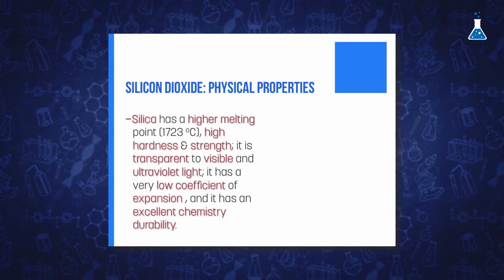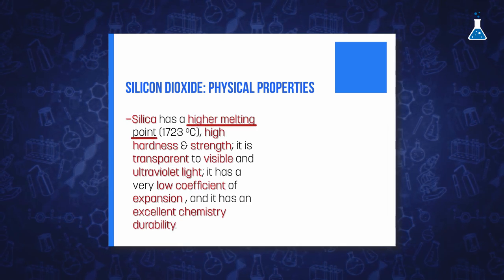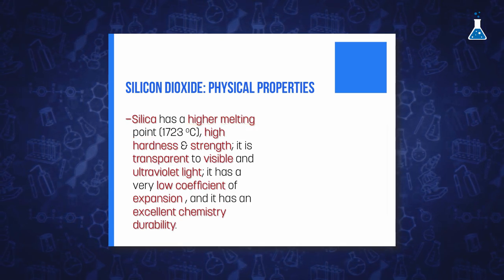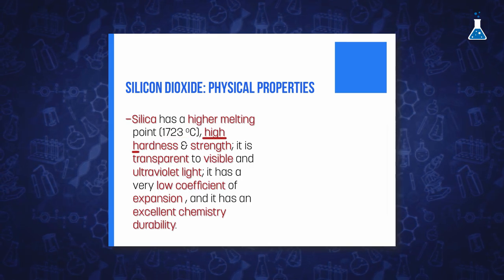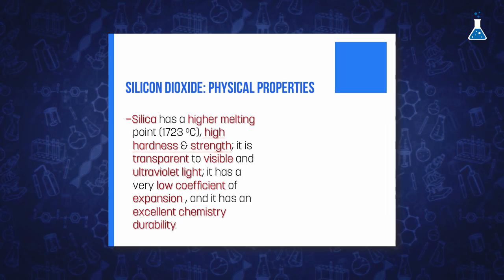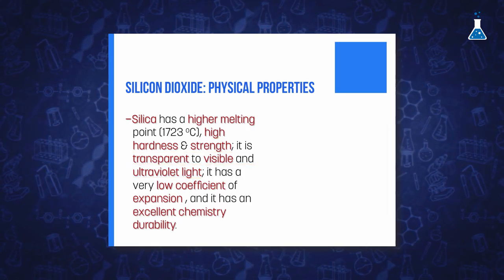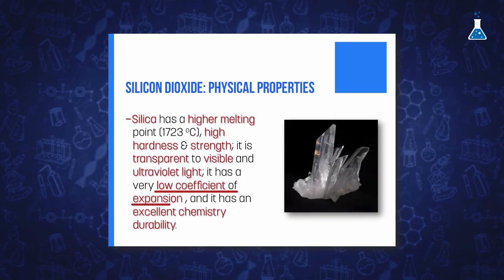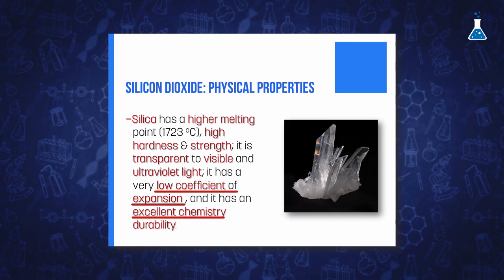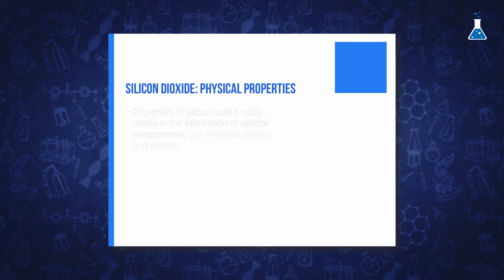With respect to the physical properties of silica, it should be remarked its high melting point, which has been determined to be 1723 Celsius degrees, its high hardness and strength, and its transparency to visible and ultraviolet light. These exceptional properties, in addition to its very low coefficient of expansion and its excellent chemical durability, make this compound very useful as an optical material.